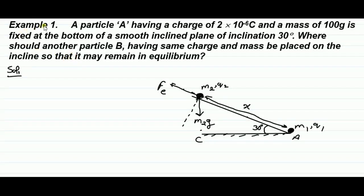Our first problem is: a particle A having a charge of 2×10⁻⁶ coulomb and mass of 100 gram is fixed at the bottom of a smooth inclined plane of inclination 30 degrees. Where should another particle having the same charge and mass be placed on the incline so that it may remain in equilibrium?